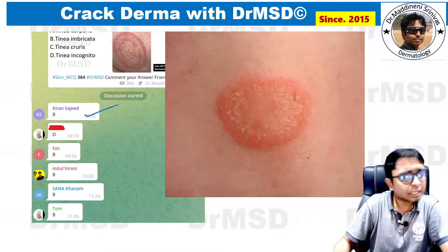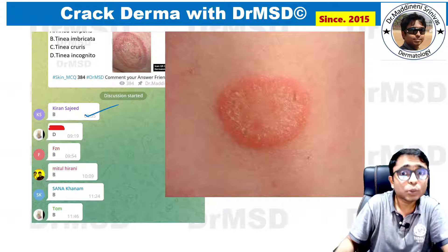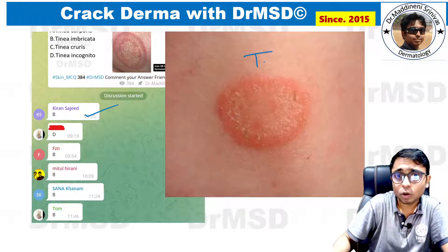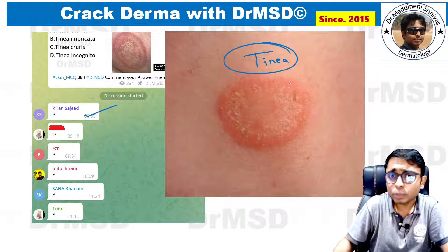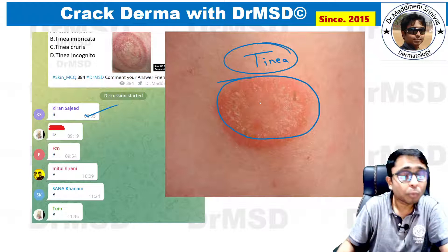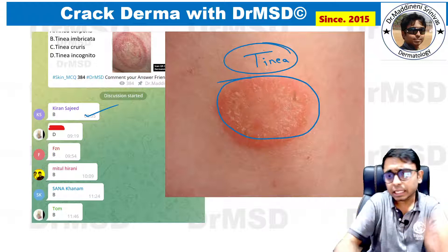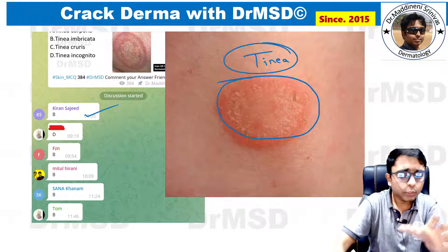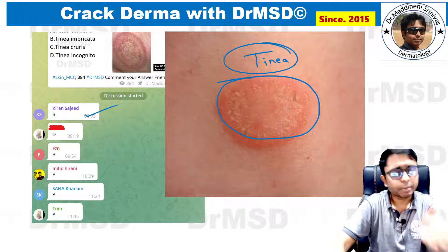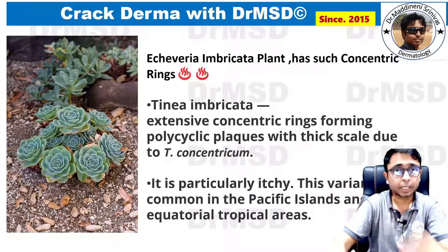What is the clinical feature which will differentiate this from normal tinea? In normal tinea, there is going to be only one concentric ring — there will not be any more concentric rings inside. This is going to be usual tinea, which can be cruris or corporis depending upon the site of involvement.